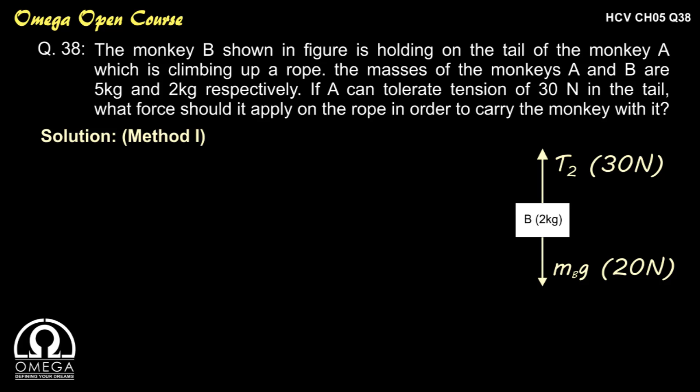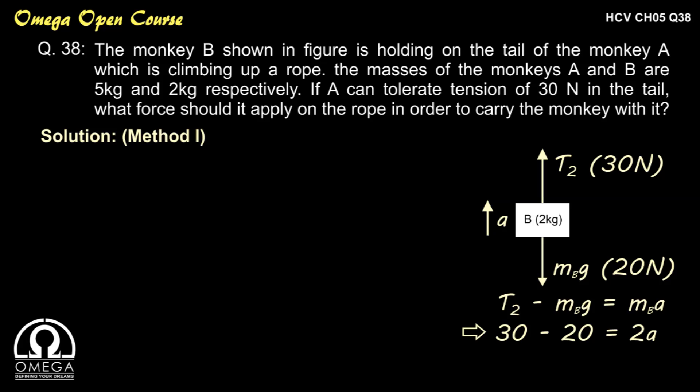To find the maximum tension that monkey A can apply on the rope, let's assume that both monkeys are moving up with an acceleration A. In the free body diagram of monkey B, the tension T2 must equal 30 N, which is the maximum force the tail can tolerate, and gravitational force remains 20 N. Writing forces in the vertical direction: T2 − M_B × g = M_B × A, which gives 2A = 30 − 20, so acceleration = 5 m/s².